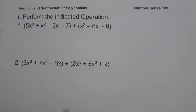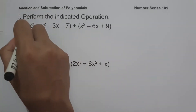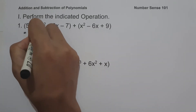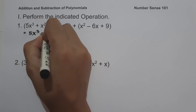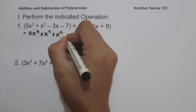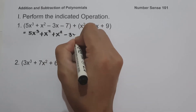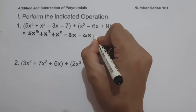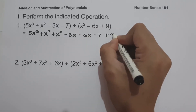On the first example, we have the quantity 5x cubed plus x squared minus 3x minus 7, plus the quantity x squared minus 6x plus 9. In order to simplify this, all we have to do is combine like terms. So let us rewrite this as 5x cubed, plus x squared, plus x squared, minus 3x, minus 6x, minus 7, plus 9.